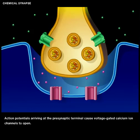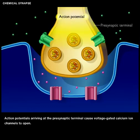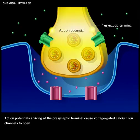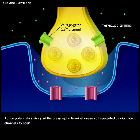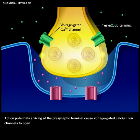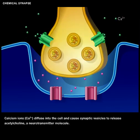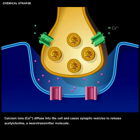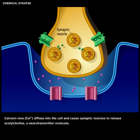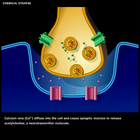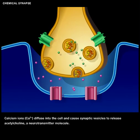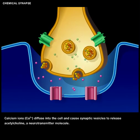Action potentials arriving at the presynaptic terminal cause voltage-gated calcium ion channels to open. Calcium ions diffuse into the cell and cause synaptic vesicles to release acetylcholine, a neurotransmitter molecule.